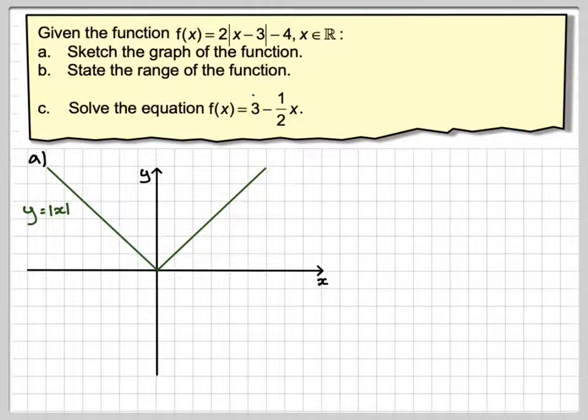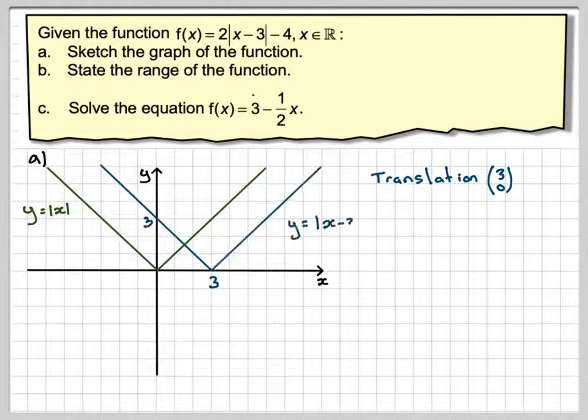The minus 3 bit means that we need to translate this function 3, 0. So, that means at this point here we'll go along 3 units, and every other point we'll move along 3 units. We'll mark on 3, and this is the graph of y is equal to the absolute value of x minus 3.